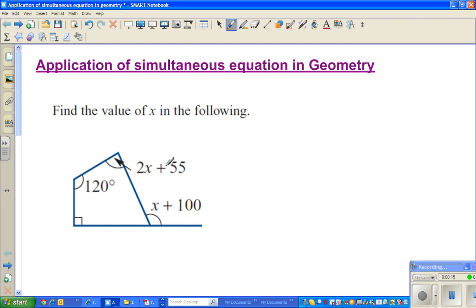So I've taken a simple example from geometry, where this is a quadrilateral, a four-sided polygon. We are told this angle is 120°, this is 90°, we don't know this angle, and you want to find the value of x here.